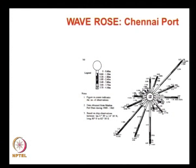We will discuss about the wave rose diagram. We also have a wind rose diagram. The wave rose diagram gives certain information: the wave height, the direction of the wave, and the percentage of occurrence.